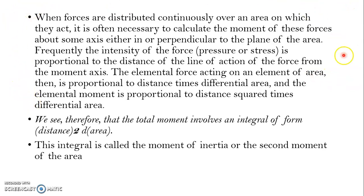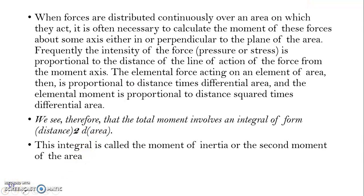Moment of inertia is an area property of a material. Suppose a force is acting on a material — a moment will be created, concentrated at some point, and that moment concentration depends on the cross-section of the material. In general, we define the area moment of inertia, or second moment of area, as distance squared multiplied by area, which gives us the second moment of area or moment of inertia of the given body.